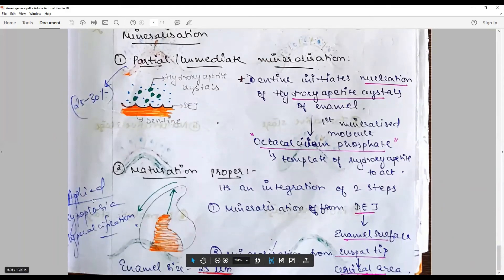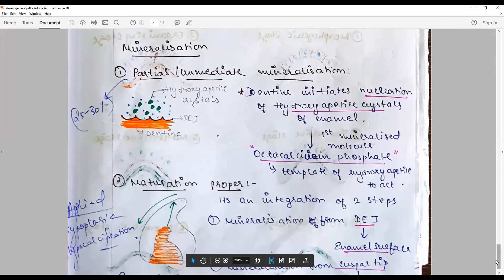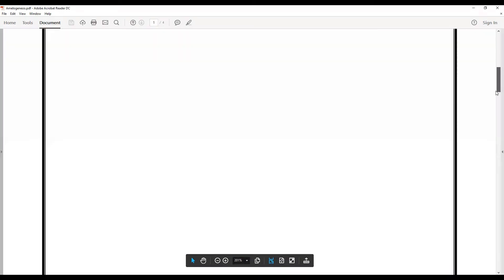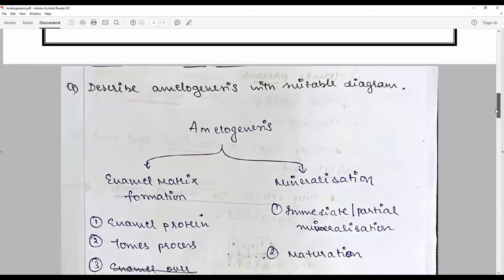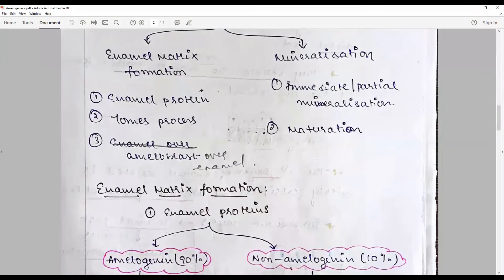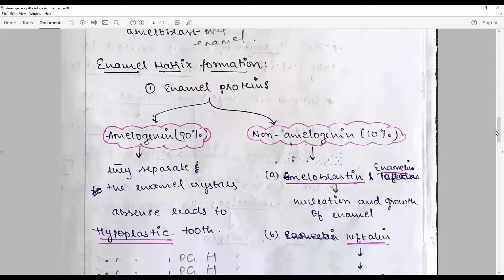The applied part is: if there is improper maturation, it could lead to hypoplasia, hypocalcification, amelogenesis imperfecta, or other structural abnormalities of enamel. Remember, amelogenesis starts with secretion and ends with formation.